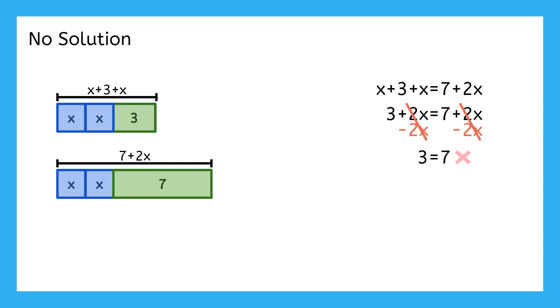Uh-oh, that's not true. What's happening here is that no matter what number I put in for the x, the two x's on the left will always match the two x's on the right. But no matter what we do, we can't make the 3 on the left equal to the 7 on the right. So there is no solution to this equation.